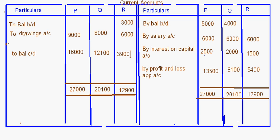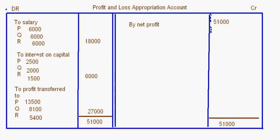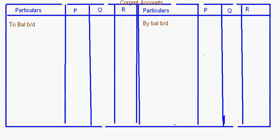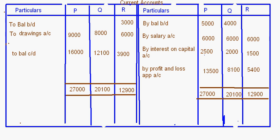So this is what we were supposed to do in this question — we prepared the Profit and Loss Appropriation Account and distributed the profits, prepared the Capital Accounts with no changes, and then the Current Accounts. These are the kinds of questions that come in the basics of partnership. I hope you have understood these. With this, I will end this topic. Bye.